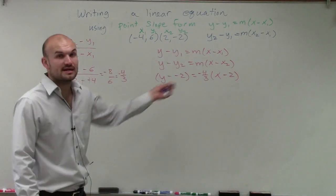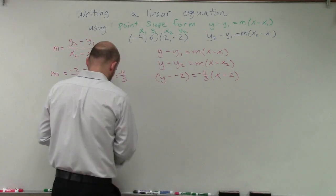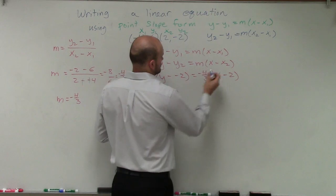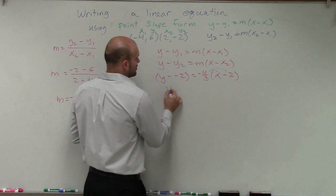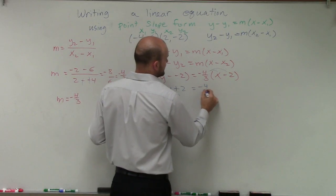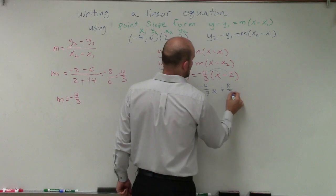All right. So now what I can do is I can apply my distributive property. And then that turns into y plus 2 equals negative 4 thirds x. And this becomes now a positive 8 thirds.